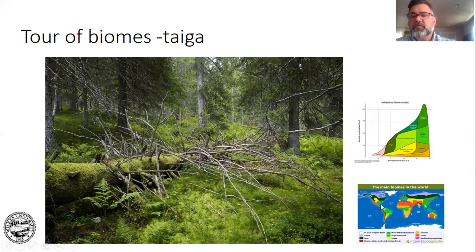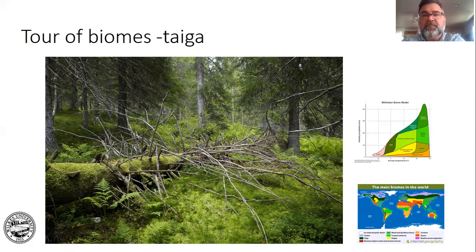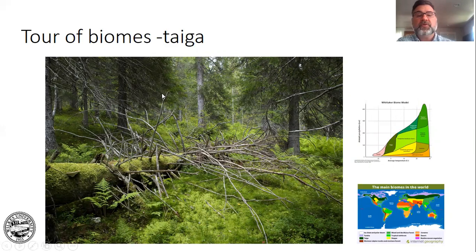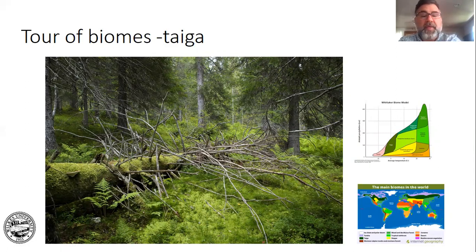Moving south to the taiga. The taiga habitat in the bottom right is the largest biome in the world — a big chunk of North America and a big chunk of Europe and Asia. It's temperate with very cold winters and mild summers. Most of the plants are conifers — spruces and pines — but you also find birches, alders, willows, and the Ericaceae such as blueberries and cranberries. Animals: think moose and beaver.